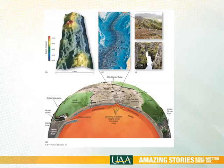This diagram shows spreading taking place in the Atlantic Ocean as the Americas pull away from the so-called old world. And then on the other side you have subduction taking place along the west coast of South America.